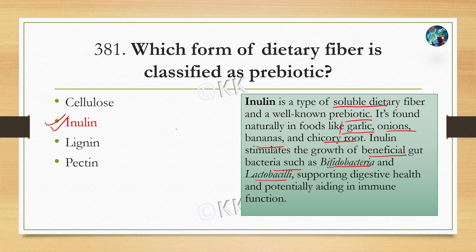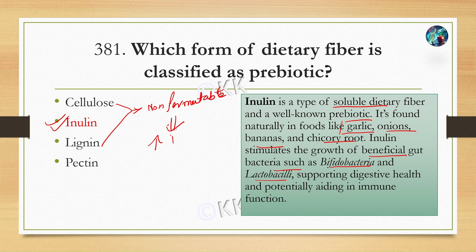The other options: cellulose and lignin are both non-fermentable for our gut bacteria, so they increase stool bulk and help with constipation. Pectin is a soluble fiber, which we get from fruits like grapes, apples, etc.